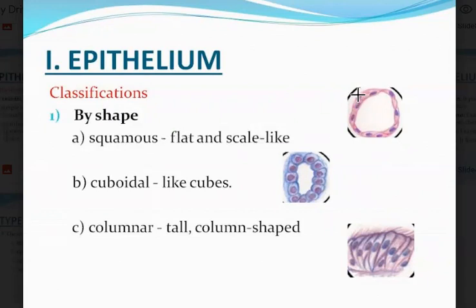You see the nucleus running in the center of the cell, but the long axis is horizontal — it runs parallel to the basement membrane. Then you have cuboidal cells that look like cubes. The nuclei are round, and all sides are equal, just like a cube.